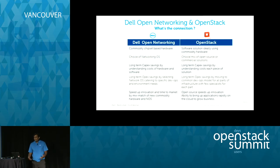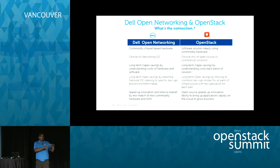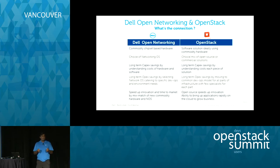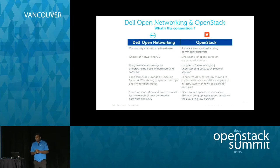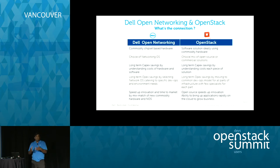Going into why Dell Open Networking and OpenStack — where is the connection? Physical networking has a role in OpenStack, but it's kind of the invisible part — you just want it to work so you can focus on OpenStack. We promote commodity-based chipsets in our switches, and OpenStack is ideally working on commodity hardware as well. We offer a choice of networking OS; similarly, OpenStack is open source with a range of commercial vendors, so you get a choice of going all open source or leveraging commercial vendors.